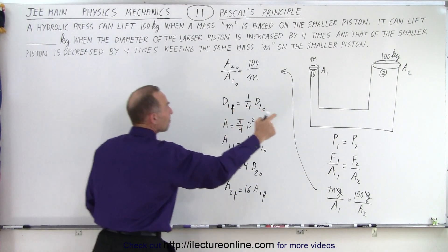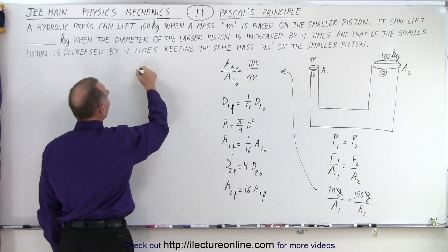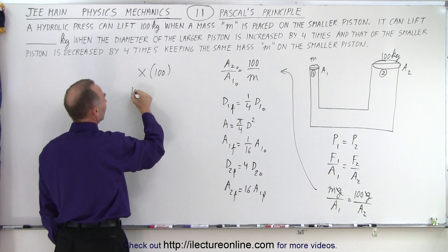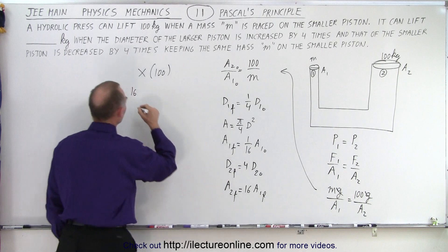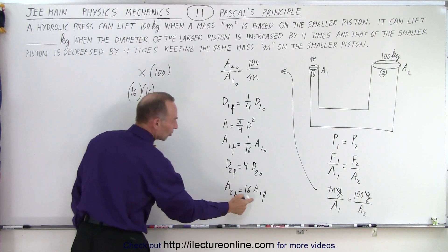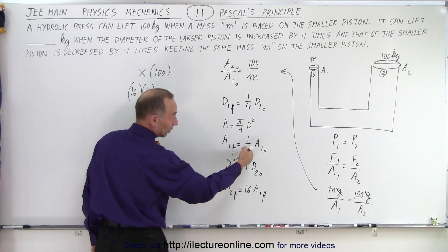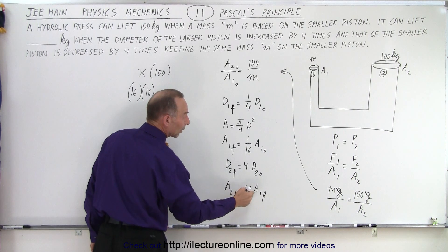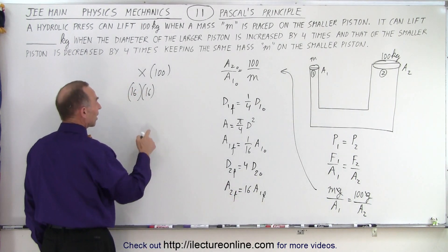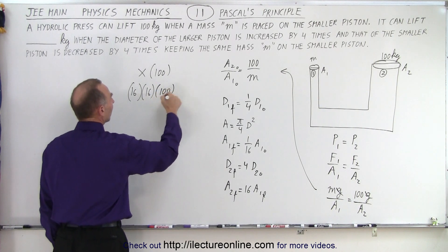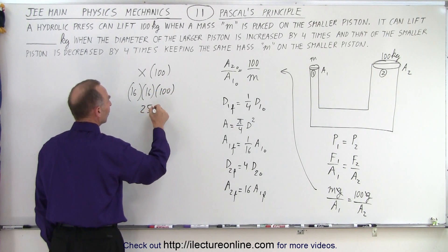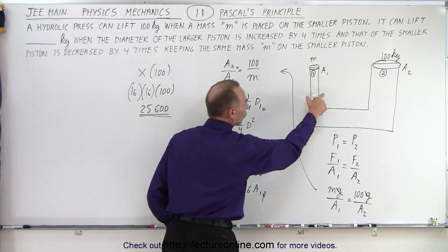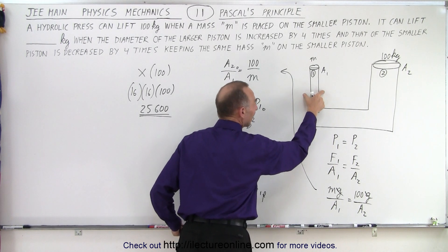So, essentially, the mass we can lift now here, that would be x times 100, and the x would be 16 because of the area of the first one, times 16 because of the change in the area of the second one. So, we reduce this by 16, that means we can lift 16 times as much mass, and we increase this by 16, so we can lift again 16 times as much mass. So, it's 16 times 16 times 100, that's, of course, 256 with two more zeros, or 25,600 kilograms.